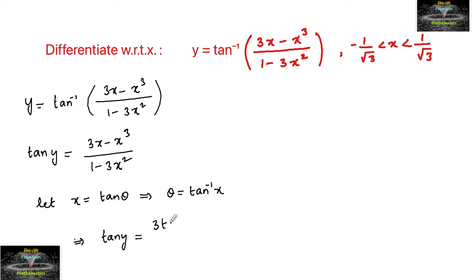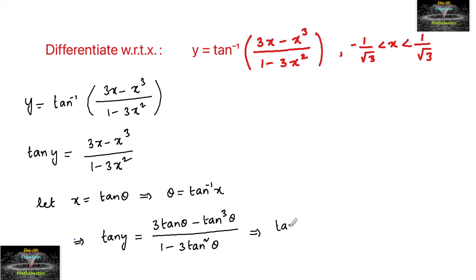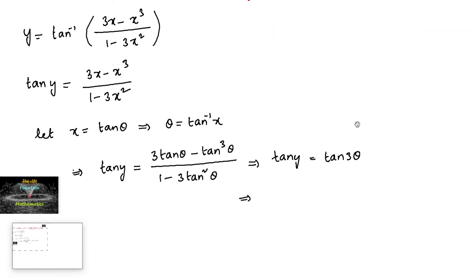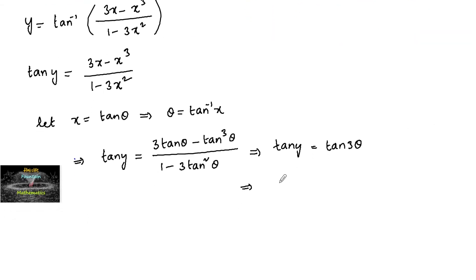So tan y is equal to (3 tan theta minus tan cube theta) upon (1 minus 3 tan square theta). Now, (3 tan theta minus tan cube theta) divided by (1 minus 3 tan square theta) is the tan 3 theta formula, so we can write tan y is equal to tan 3 theta, which is tan of 3 times tan inverse x.